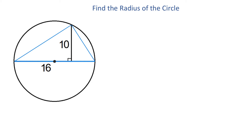Let's call this triangle A, B, and C. In this triangle, all the vertices are on the circle, and one side is the diameter.